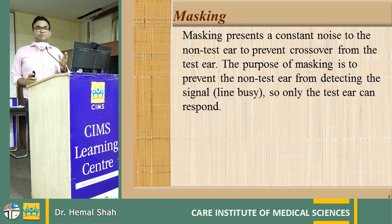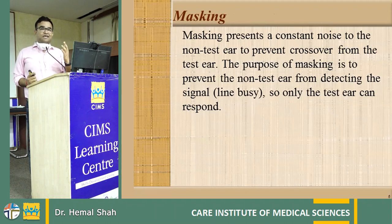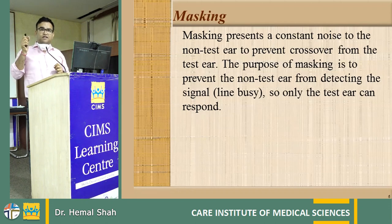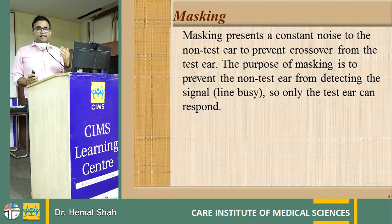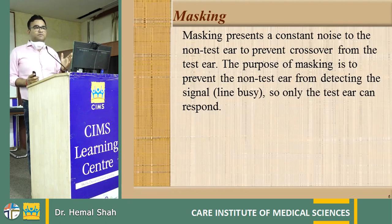The audiometry test is done separately for the right ear and the left ear. Whenever you are testing the right ear, there is always a possibility that the patient is responding falsely because they can hear from the left ear. To mask the left ear, we give a certain intensity of sound to the left ear so that we can exclusively get the data of the right ear only. This is known as masking — it represents a constant noise delivered to the non-test ear to prevent crossover from the test ear.